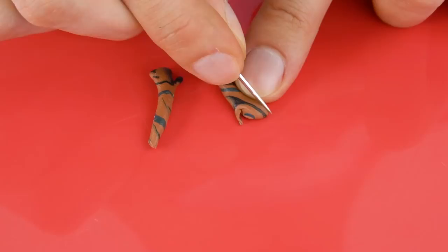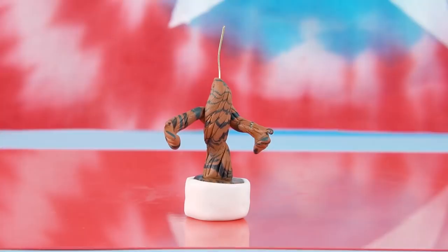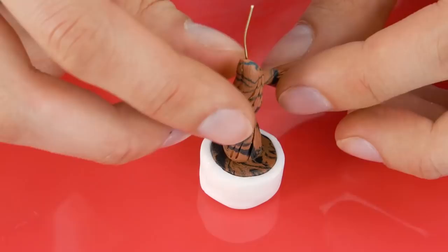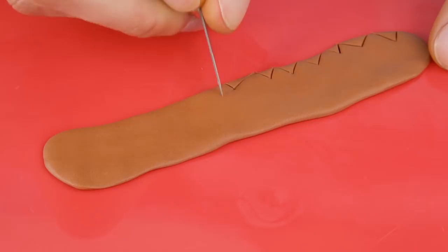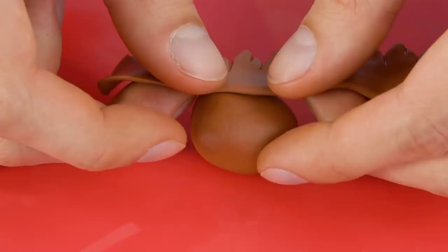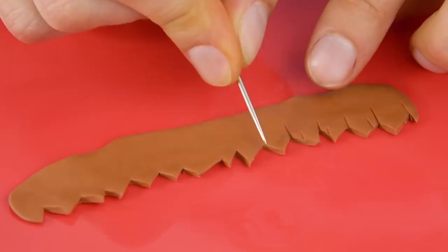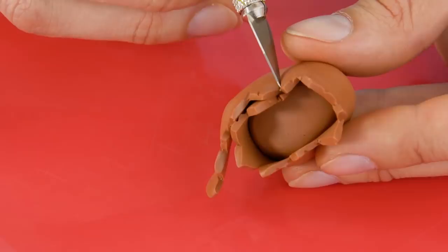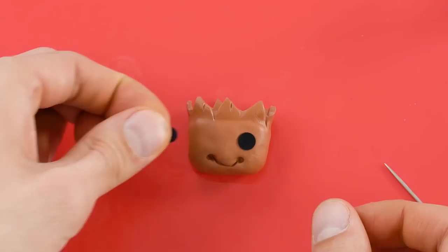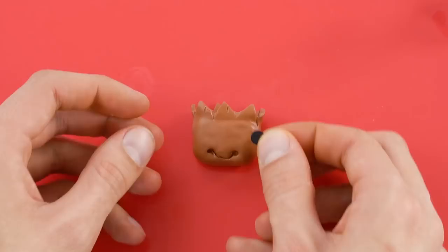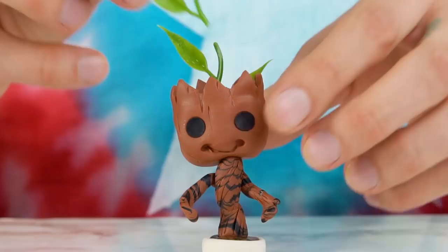Now make his cute little arms using a toothpick. Add some lines for extra detail. Now we need to make Groot's head. Roll out some clay and cut out this zigzag pattern. Wrap it around to form his head. Use the end of a sewing pen to make the corners of his mouth. Then draw on his smile with a toothpick. Add two black clay circles for eyes.